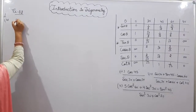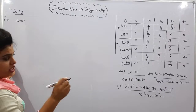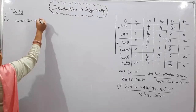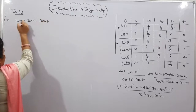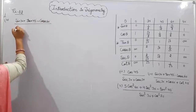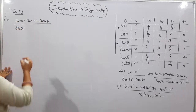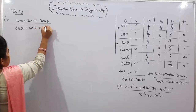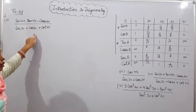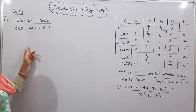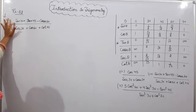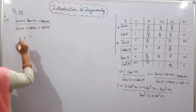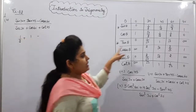Part 4: [sin 30° + tan 45° − cosec 60°] divided by [sec 30° + cos 60° + cot 45°]. All trigonometric ratios are present in this question. We will put values from the table. Sin 30 = 1/2, tan 45 = 1, cosec 60 = 2/√3.